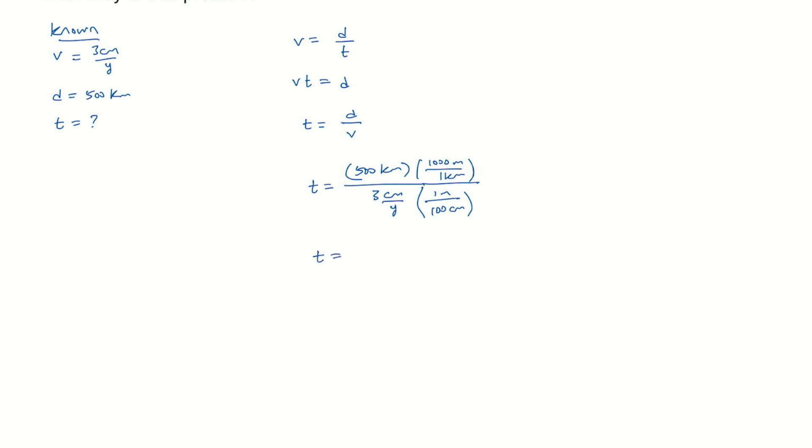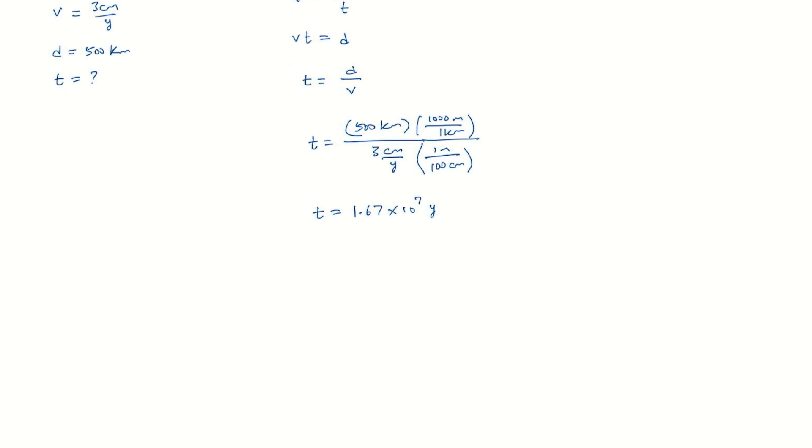Okay, I did this calculation, and I found the time is 1.67 times 10 to the 7 years. And let's see. So we have 3 centimeters per year, so we should keep 1 sig fig. So we'll call that 2 times 10 to the 7 years.